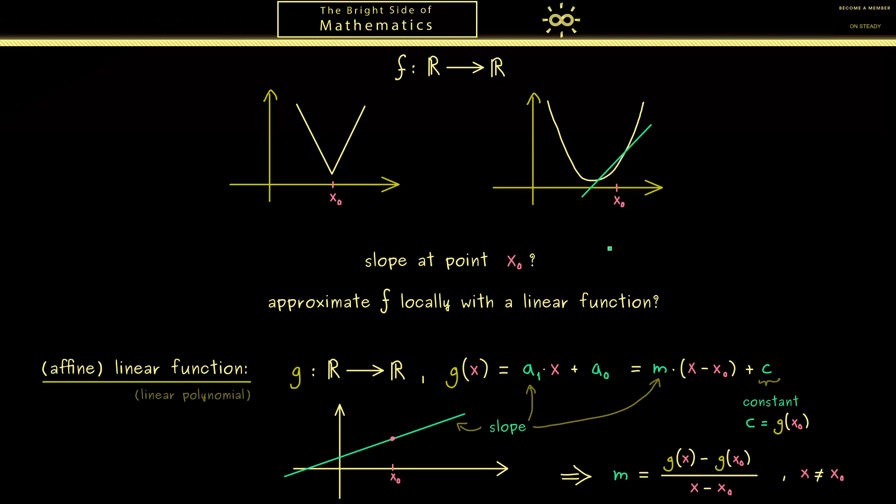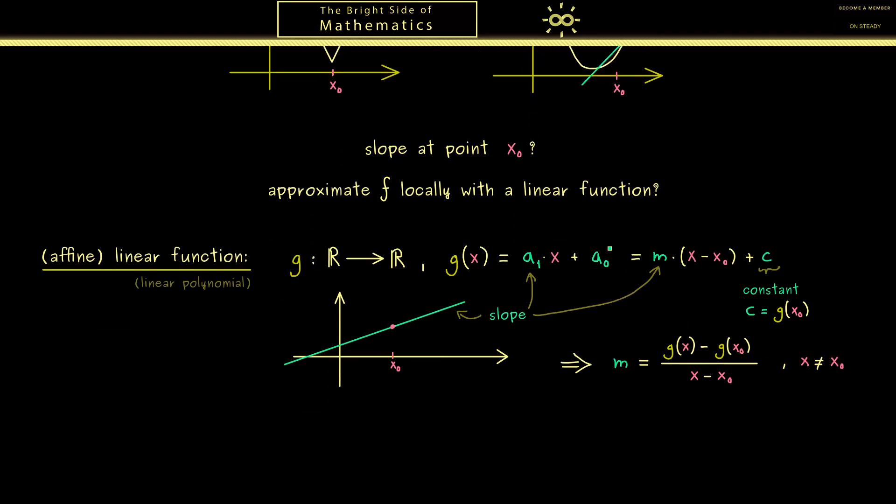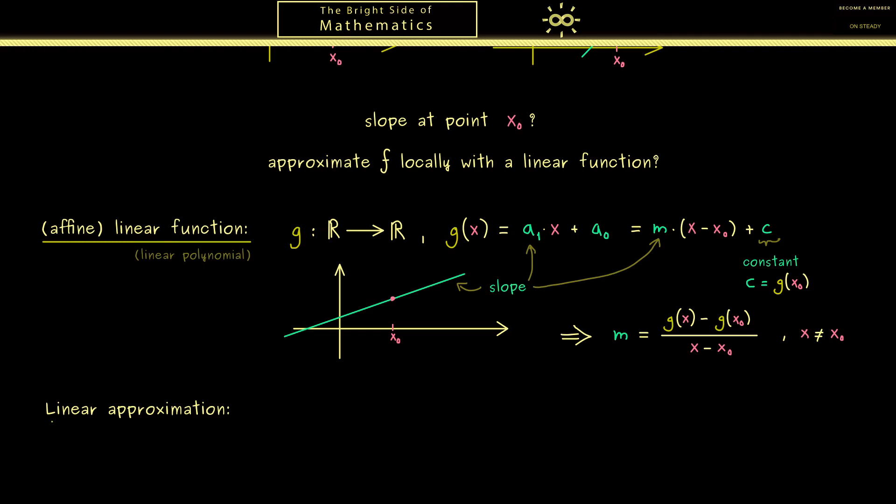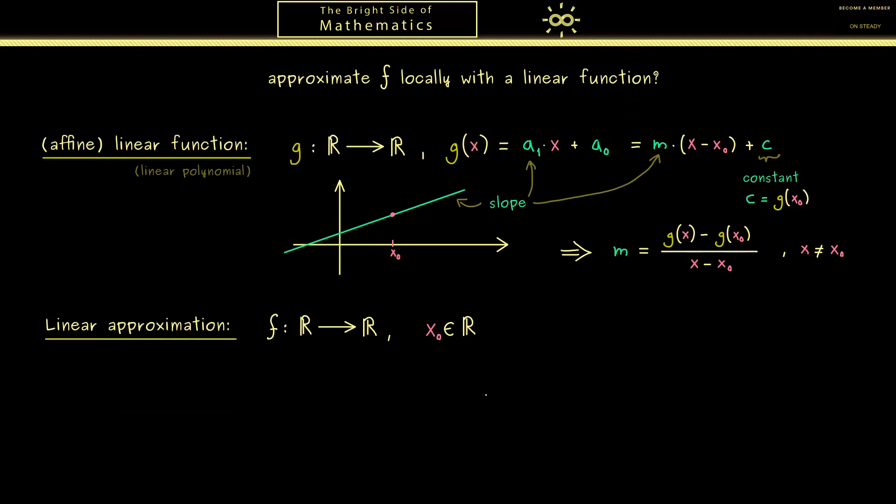Now we have everything to do our linear approximation. First let's do it for a function with domain R. And as before we want a local approximation at a given point x0. Therefore let's look again at the graph of the function. For example it could look like this.